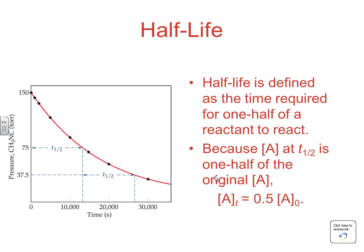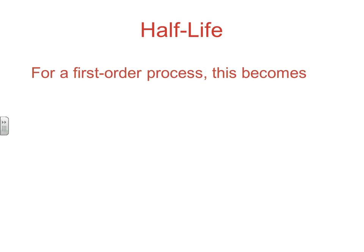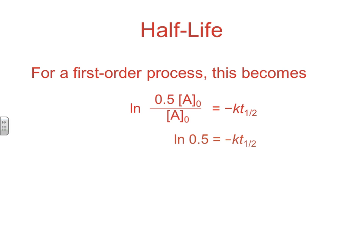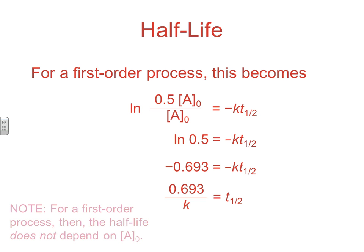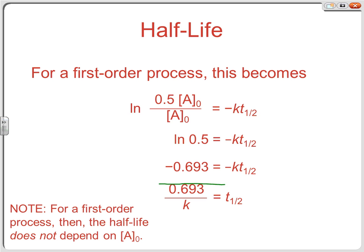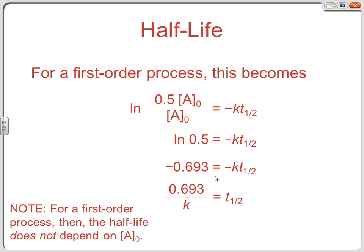We take that relationship and substitute it into our first order integrated rate law. Remember, subtraction is division in log math, so ln(A_t / A_naught) equals negative k times t-half. When we substitute in 0.5*A_naught and solve, we get the equation t_1/2 = 0.693/k. This is basically what we looked at in Chapter 21 — if we know the half-life we can find the rate constant, and vice versa.